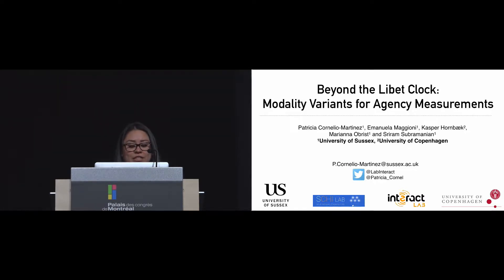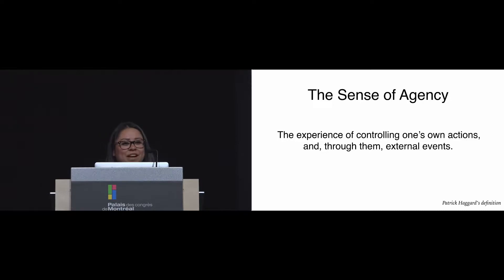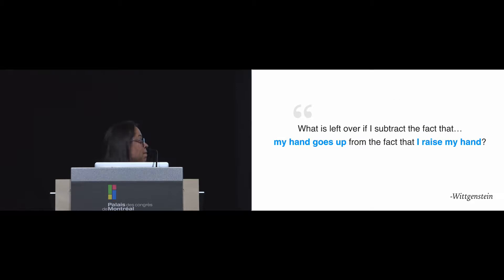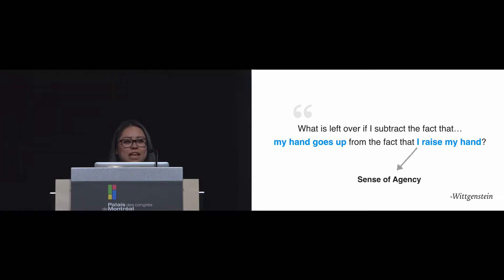As this paper is about agency, I would like to start my presentation by defining the sense of agency. The sense of agency refers to the experience of control over one's own actions and how these actions produce or influence events in the external world. It refers to attribution of judgment, which means that I recognize myself as the agent of an action. When I say I raise my hand, that means that I decided to do it, and that represents an experience of controlling my own actions.